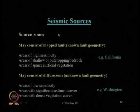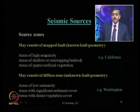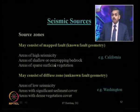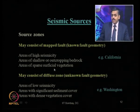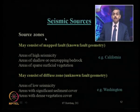We have seen earlier the various types of faults — normal fault, reverse fault, strike-slip fault, oblique fault. Depending on the fault type, you identify what type or what are the chances of seismic sources at a particular site. Source zones may consist of a mapped fault known from its fault geometry, like areas of high seismicity where you have a fault already mapped, areas of shallow or outcropping bedrock, and areas of sparse surficial vegetation.